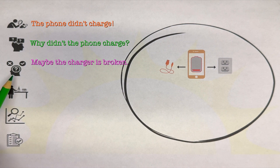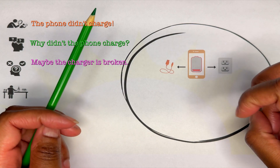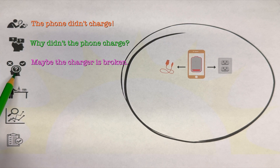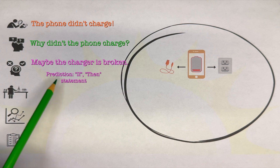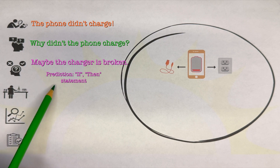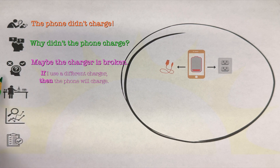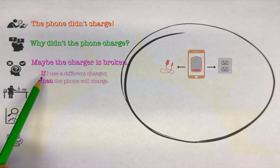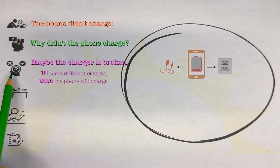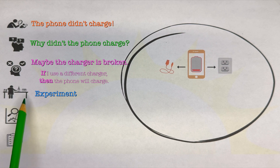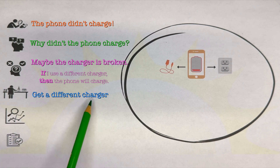The hypothesis is a predictable statement in the form of an if-then statement. The 'if' is the independent variable and the 'then' is the dependent variable. So: if I use a different charger, then the phone will charge. This is a potential answer we can actually test. After forming the hypothesis, we run the experiment — we get a different charger and see if the phone will charge.